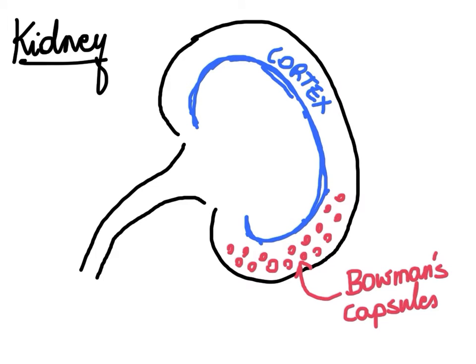In the outer layer of our kidneys, which we call the cortex, we find all these tiny little circular structures — little balls really because they're three-dimensional — and we refer to them as Bowman's capsules. These Bowman's capsules literally encapsulate little beds of capillaries, and between the two of them they succeed in filtering our blood.